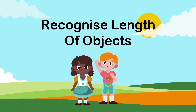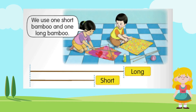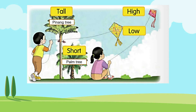Let's recognize the length of objects. Look at this picture — the children are making kites. They are using one long bamboo and one short bamboo to make the kites. This is a long bamboo and this is a short bamboo.